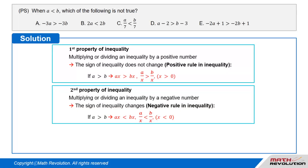The second property of inequality: multiplying or dividing an inequality by a negative number changes the direction of the inequality sign, which is the negative rule inequality. That is, if a is greater than b, then a times x is less than b times x, and a over x is less than b over x, where x is less than 0.